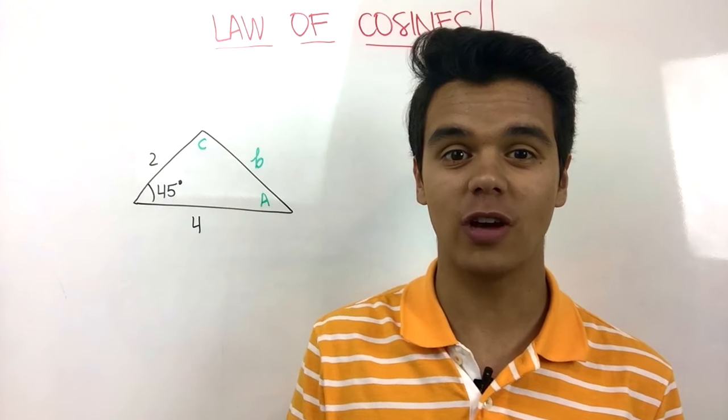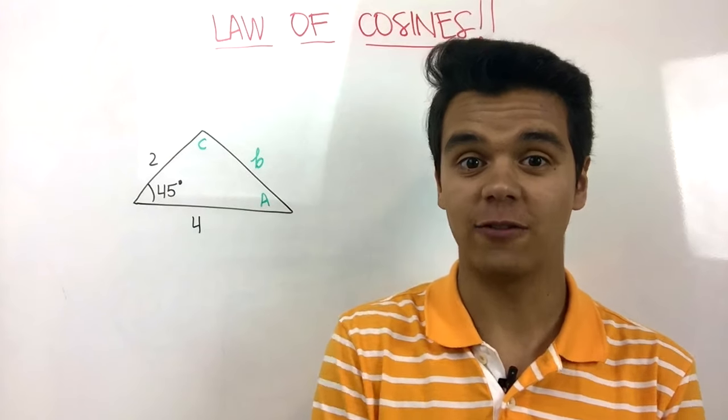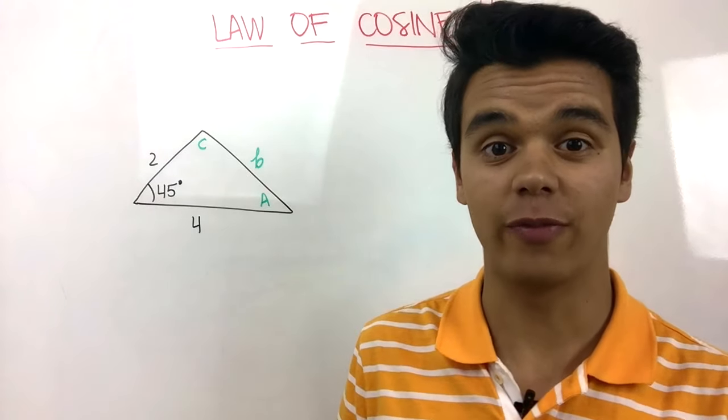Since we only have two sides and the angle in between the two of them, we have to use the cosine law. Let's solve for B.